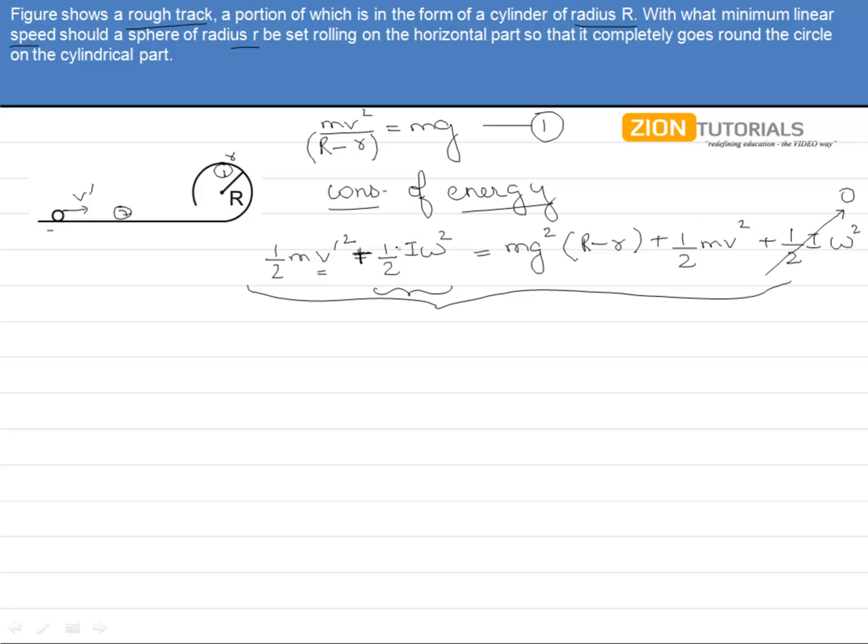Now putting the value, that is I = 2/5 mr² because it is a solid sphere. So here we can get it as 7/10 mv'² equals to g(R - r) plus 7/10 mv². Now putting the value of v² from equation number 1 into this equation number 2...